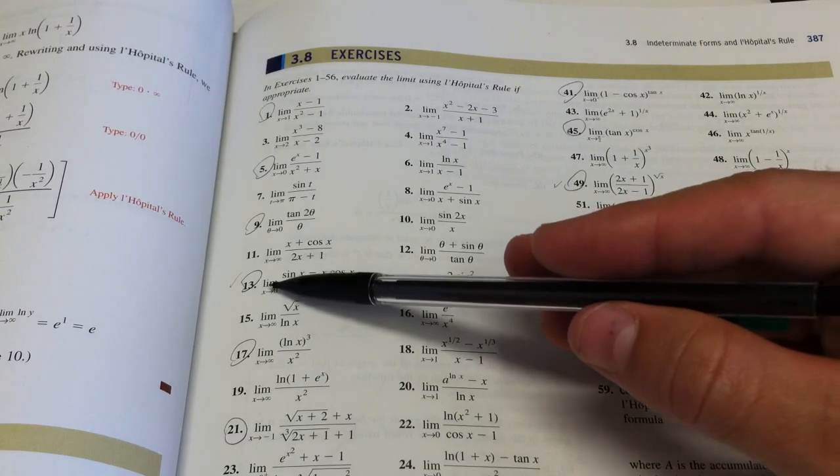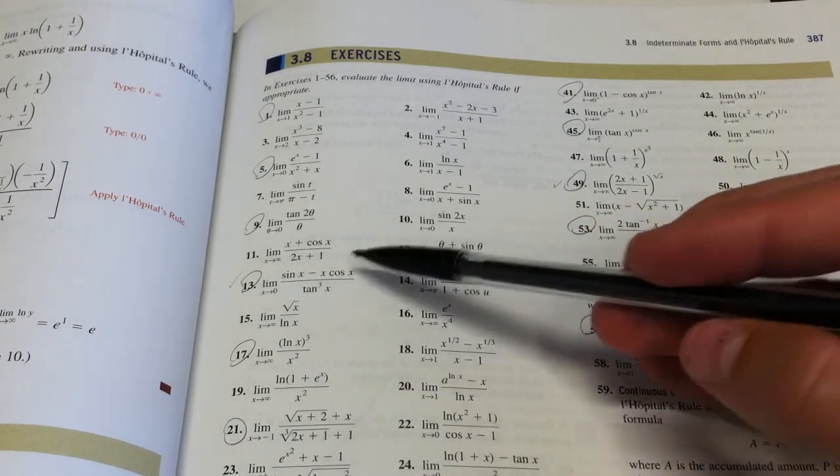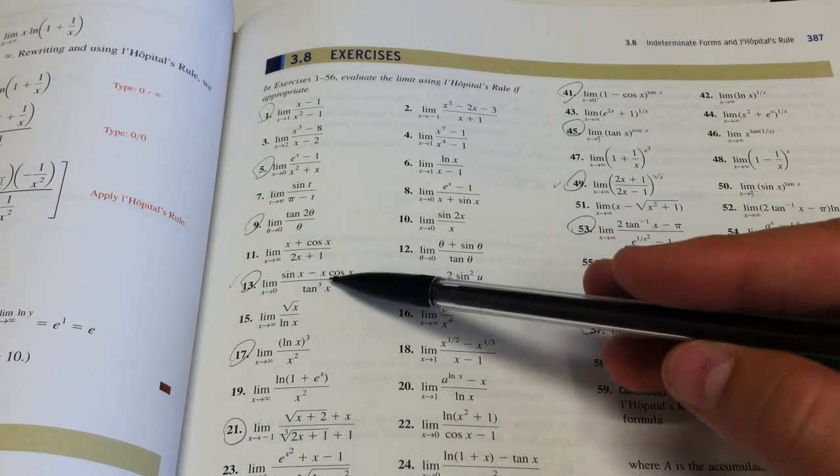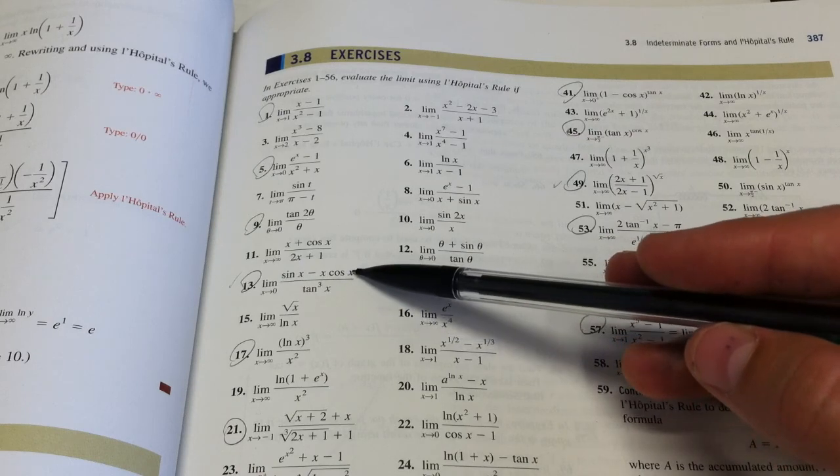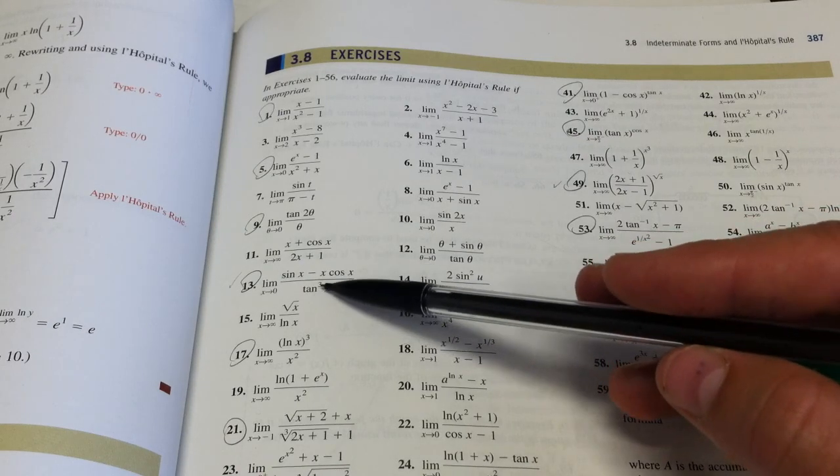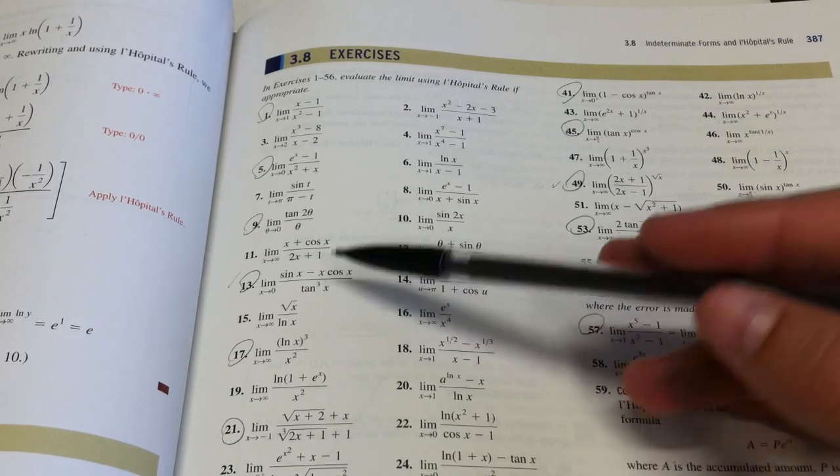So the specific problem is the limit as x goes to zero of the quantity sine x minus x cosine x, end quantity, divided by tangent cubed of x. Okay, so I've taken the liberty of writing that problem down for us.